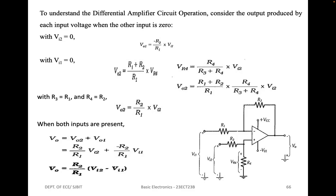With VI1 equal to zero, output voltage V02 is given as (R1 plus R2)/R1 times VR4, and VR4 equals R4/(R3 plus R4) times VI2. With R3 equals R1 and R4 equals R2, V02 can be written as R2/R1 times VI2. With both inputs present, Vo equals V02 plus V01 equals R2/R1·VI2 minus R2/R1·VI1. Therefore Vo equals R2/R1 times (VI2 minus VI1). When R2 equals R1, the output is the direct difference between the two inputs. With R2 greater than R1, the output is an amplified version of the difference.